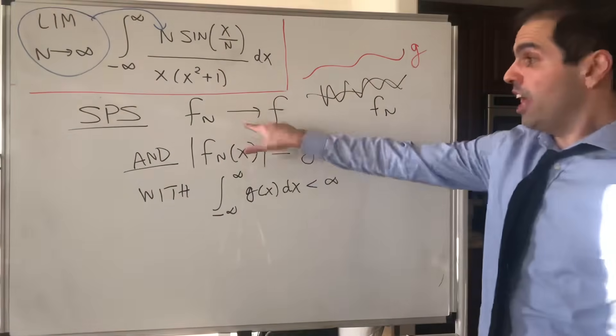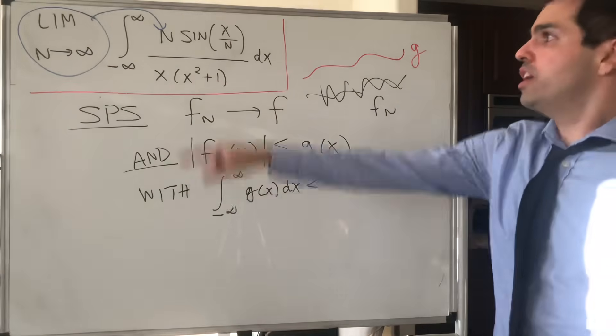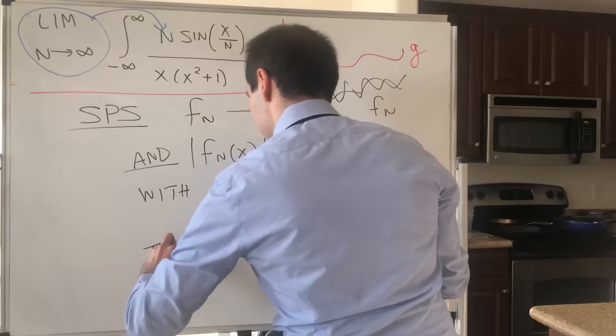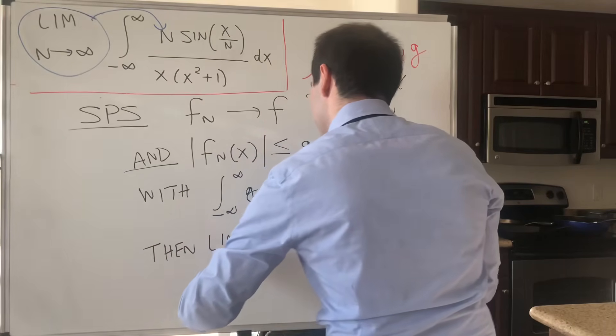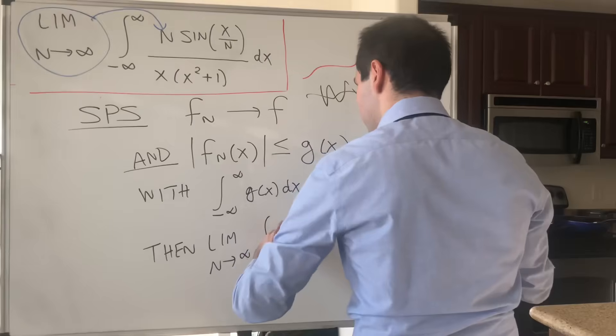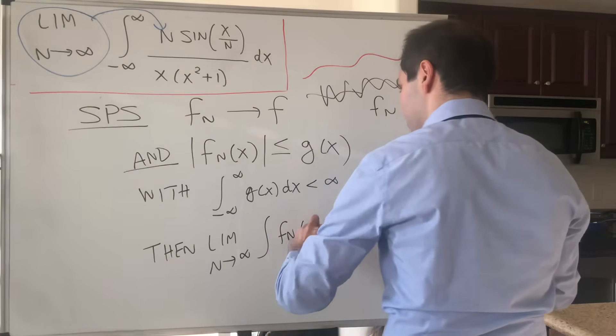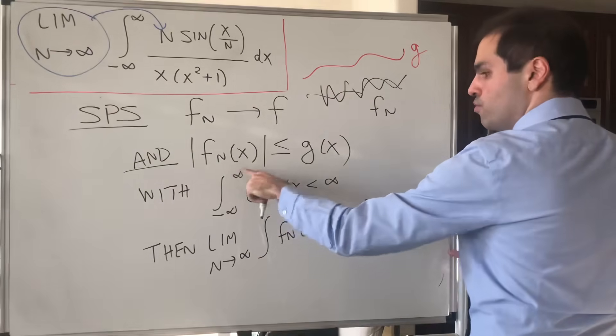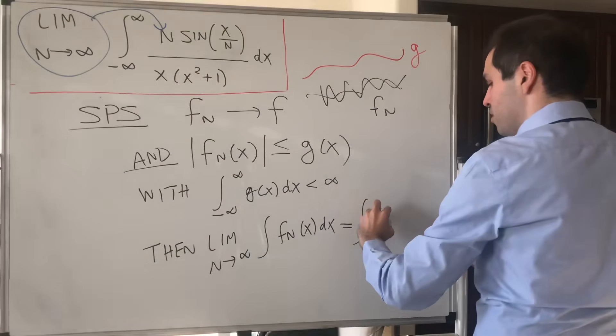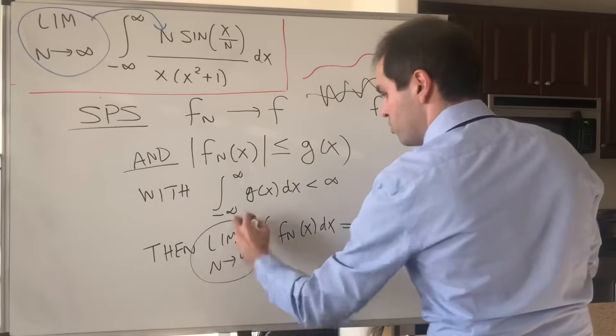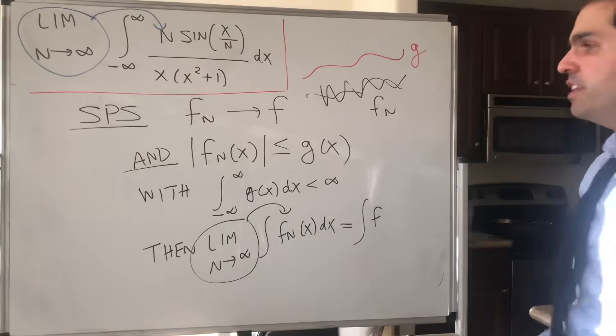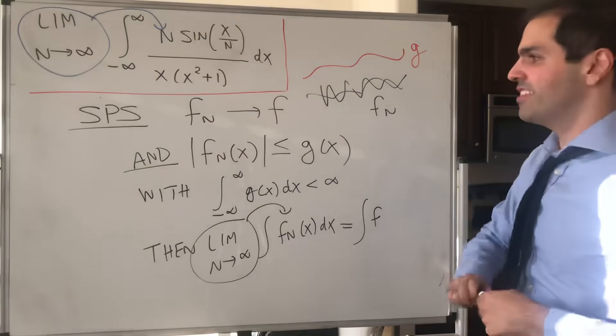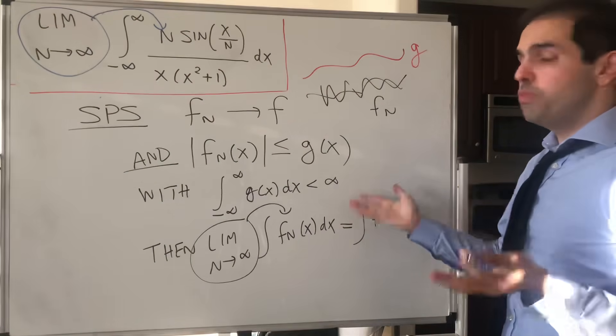Then if those conditions hold, you can actually pass into the limit. So then limit n goes to infinity of the integral of fn of x equals the integral of f, so the integral of the limits. In other words, you can just pass under the integral, and that's what's called the celebrated dominated convergence theorem.